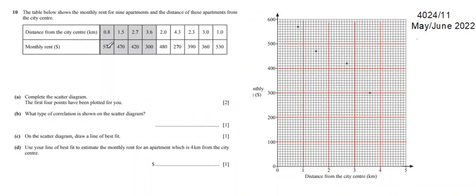Calculate the scatter diagram. The first four points have been plotted for you. Now for the two - when the distance is two kilometers, the rent is 480, or the one is 530. Started from here.